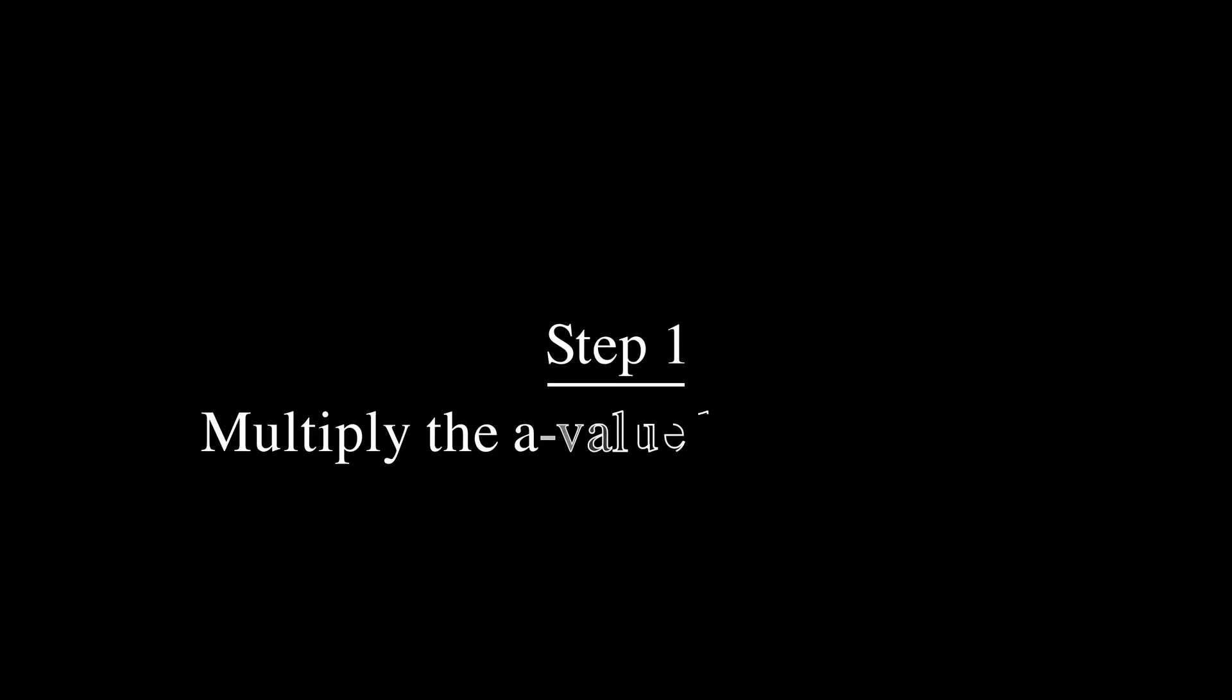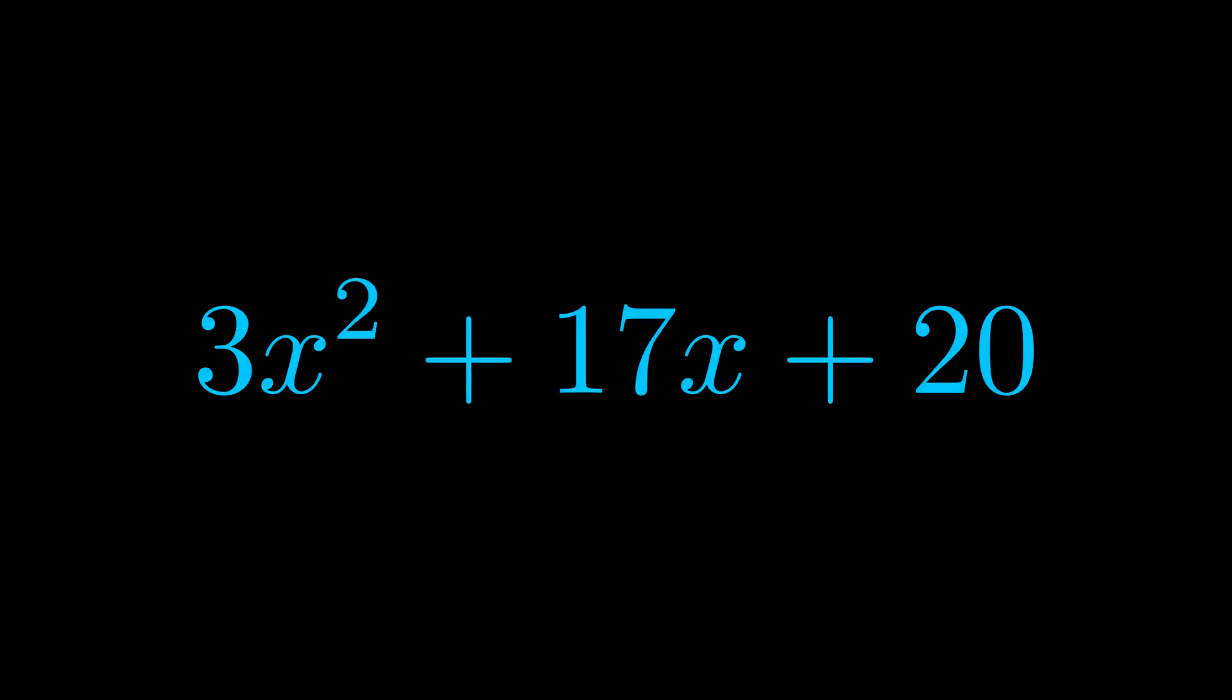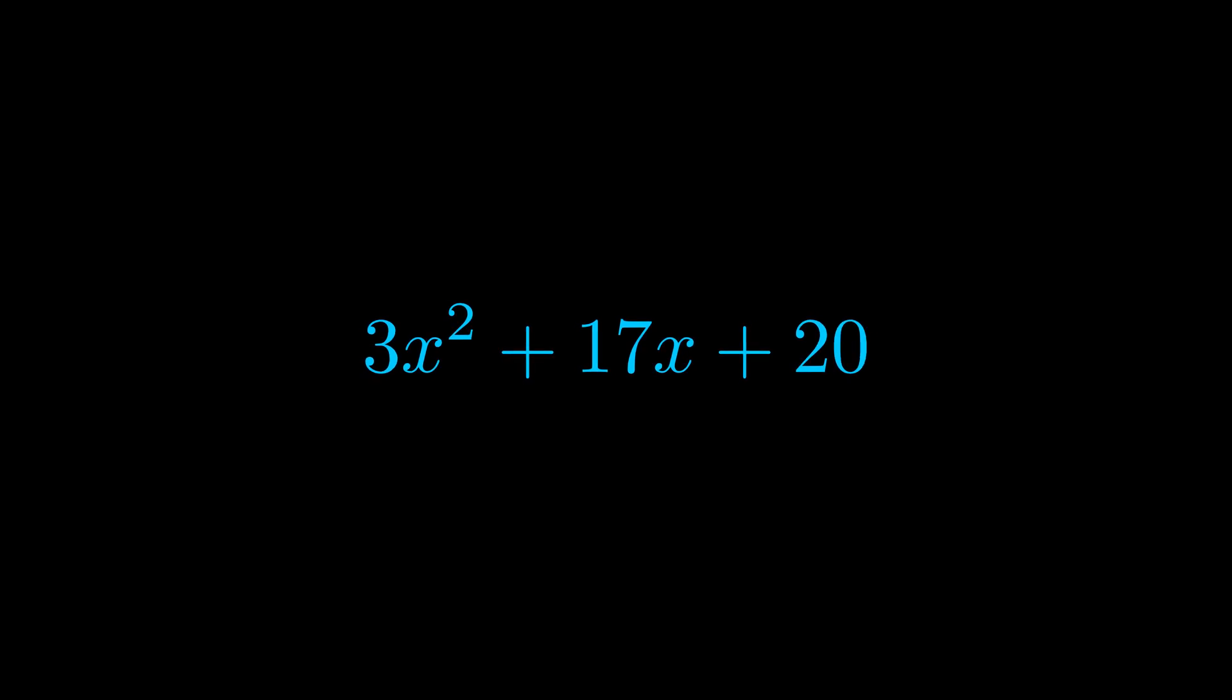Step one when factoring an equation of this form is to multiply the a value by the c value. Here we can see that our a value is the coefficient on the x squared term and our c value is the constant term.